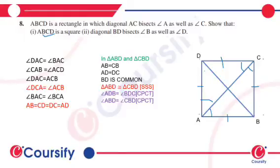In both triangles, AB is equal to CB, AD is equal to DC, and BD is common, this side is common.